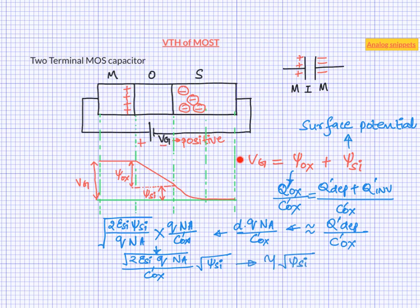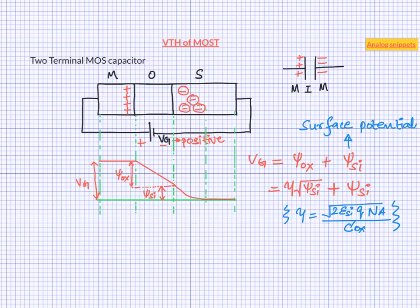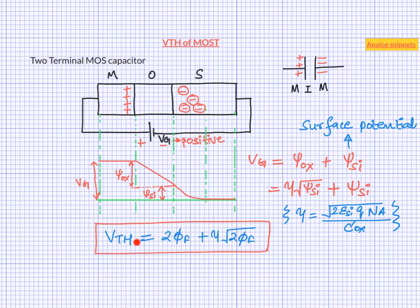So now let us come back to our starting equation. We can express the gate voltage in terms of the technology constant gamma and the surface potential. We already know that at threshold voltage the surface potential is 2*phi_f, so here we have a threshold voltage equation. Notice that as we increase the gate oxide thickness, the oxide capacitance reduces and in turn gamma increases, which in turn increases the second term of the threshold voltage equation. This tallies with our original expectation that as we increase the gate oxide thickness, the threshold voltage should increase.